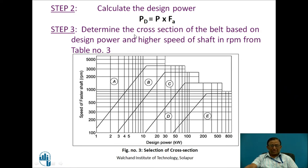After this, we determine the cross section of the belt based on design power, for which we consider the higher speed of the shaft and design power using a standard chart. The chart uses design power in kilowatts and higher speed of the shaft. For example, if I take 10 kilowatt design power and 1000 RPM of the smaller pulley, the selection falls in the B section area. So my selection of standard cross section will be B, which helps for overall economy of the belt drive.